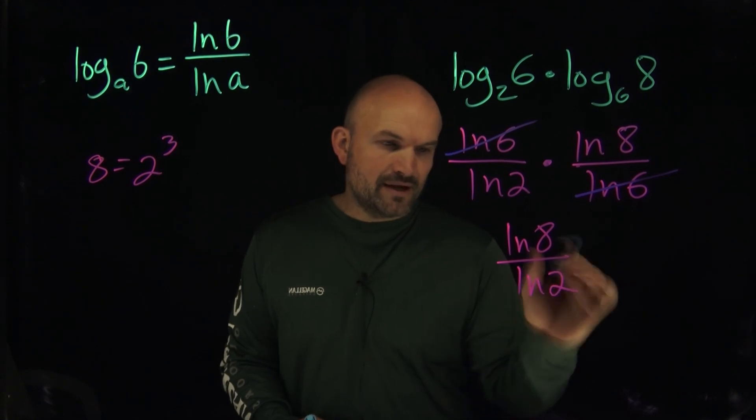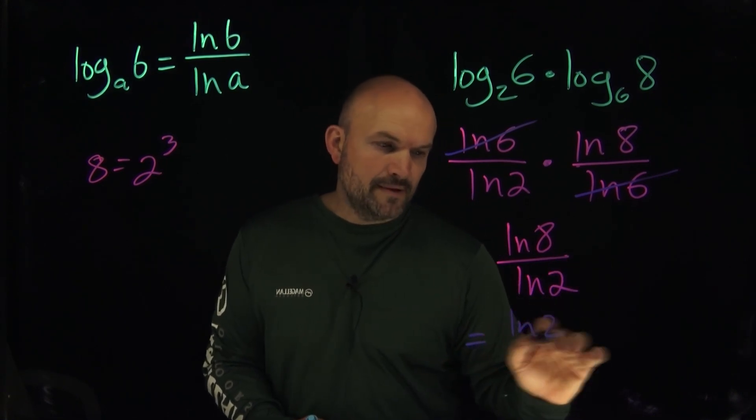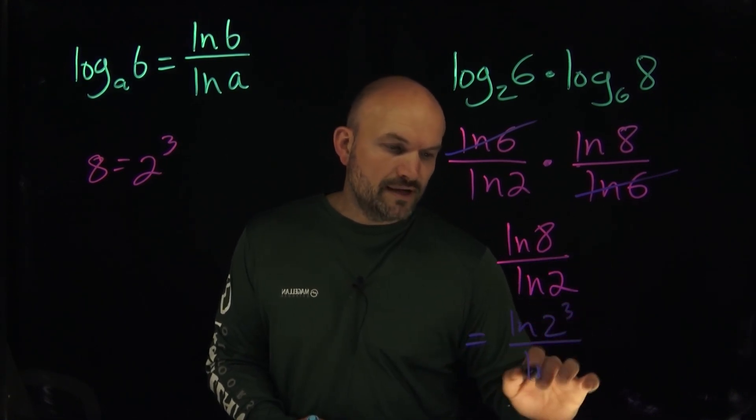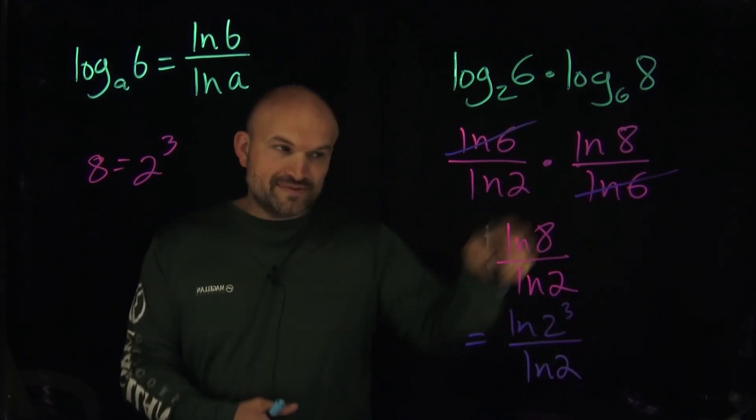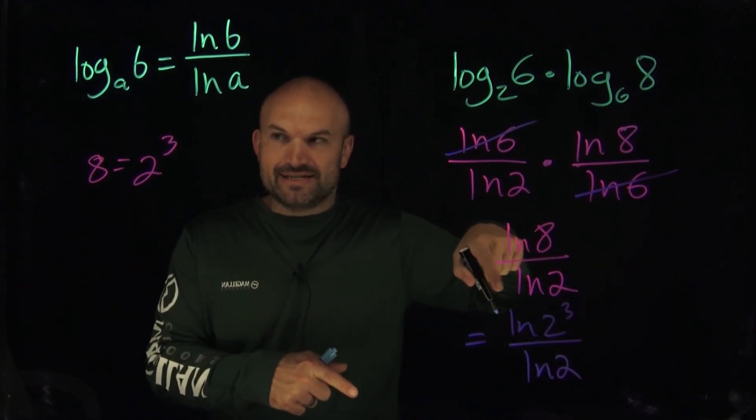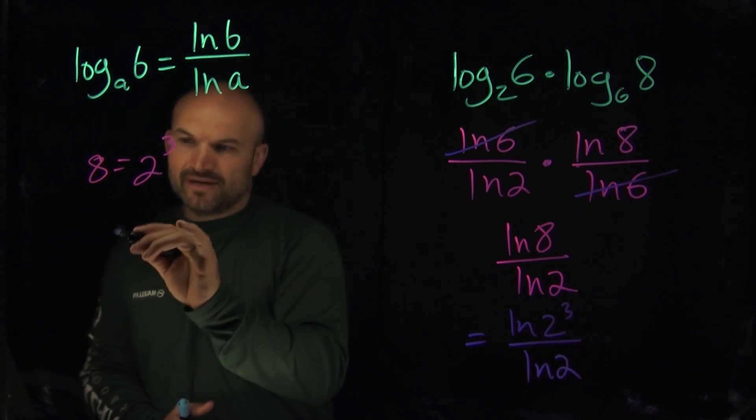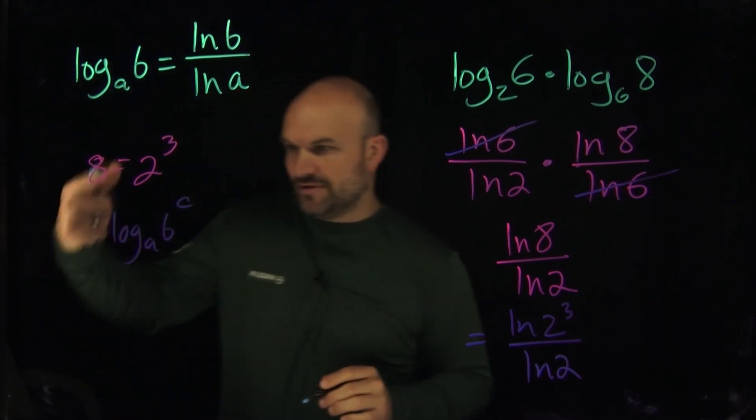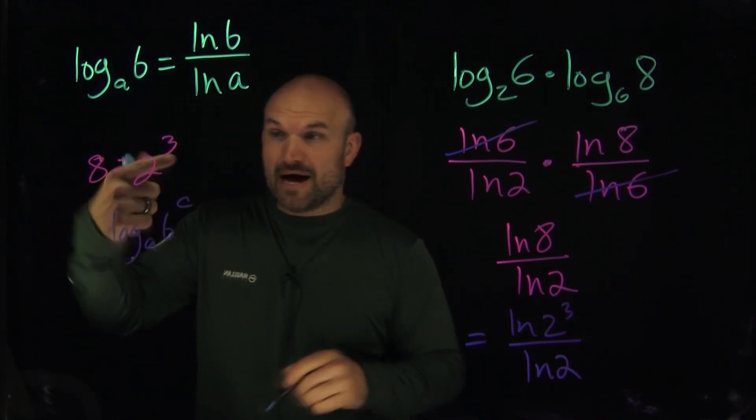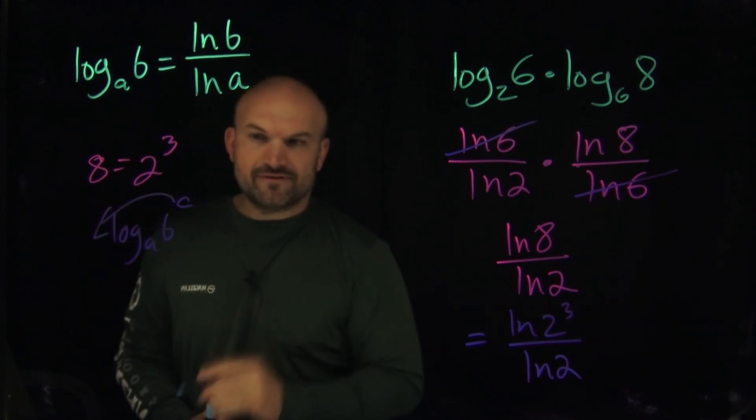If we go ahead and rewrite this, then what I'll have now is ln of 2 cubed all over ln of 2. So now what this triggers to me is the power property. And remember the power property of a logarithm basically states, if you have a logarithm base A of B raised to the C power, I can take the C out in front. Now I can just rewrite this as C times the logarithm of base A of B.